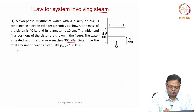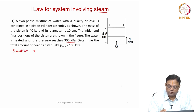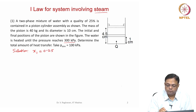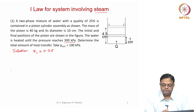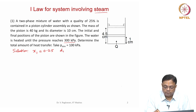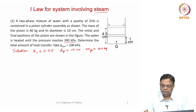Initial solution: the initial quality is 0.25. The diameter of the piston is 10 centimeters, mass of the piston is 40 kg, and the final pressure is 300 kilopascals.